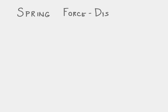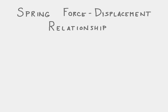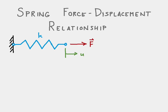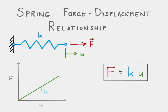We have first the spring force-displacement relationship, which describes how the displacement of a spring — that's the U we have here — relates to the force that's applied. We typically make the assumption that there's a linear relationship, and the slope of that linear relationship is the spring stiffness. We should be used to this equation where the force is equal to the stiffness of the spring multiplied by the displacement of the spring.